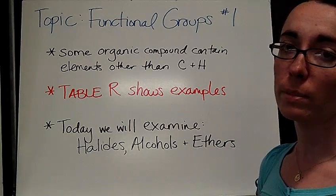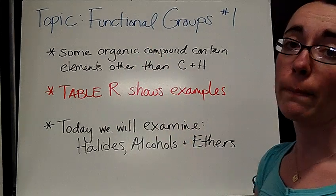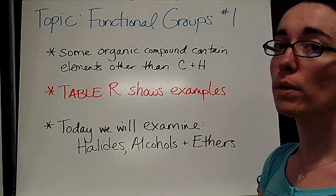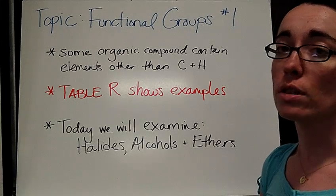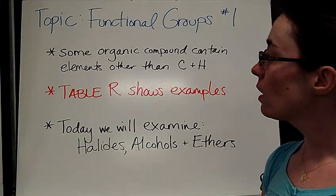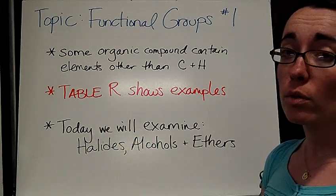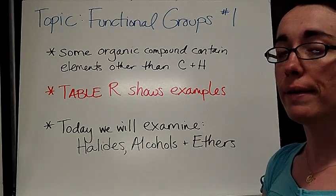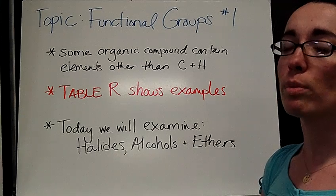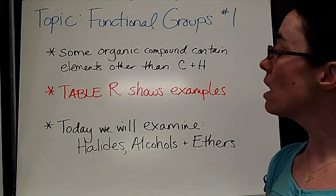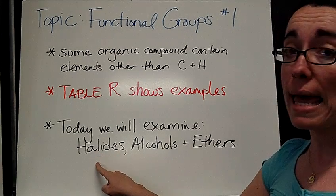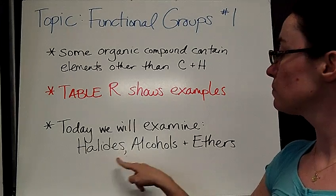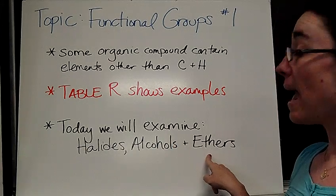Now let's break that down a little bit. Some organic compounds are going to contain more than the carbon and hydrogen that we've been talking about. Table R in your reference table will give you examples of all of these different things. There are nine of them and we're going to spread them out over a series of videos. Today we're going to examine halides at the top of that chart, alcohols, and ethers.